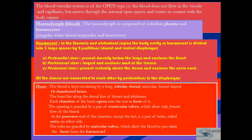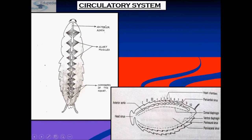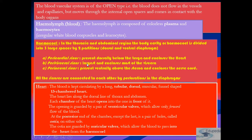The heart in cockroach lies along the dorsal line of the thorax and abdomen. Blood is kept circulating by a long tubular, dorsal muscular, funnel-shaped, 13-chambered heart. Each chamber of the heart opens into the one in front of it.